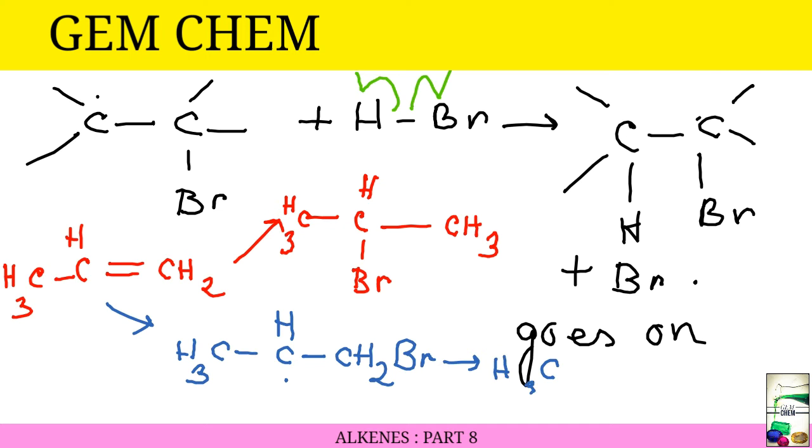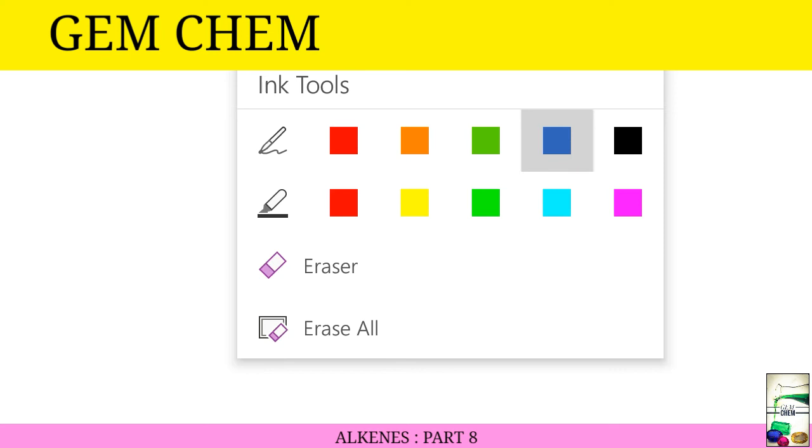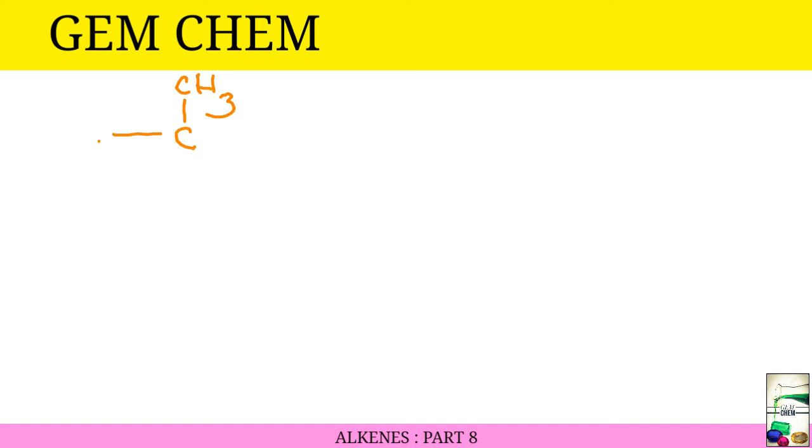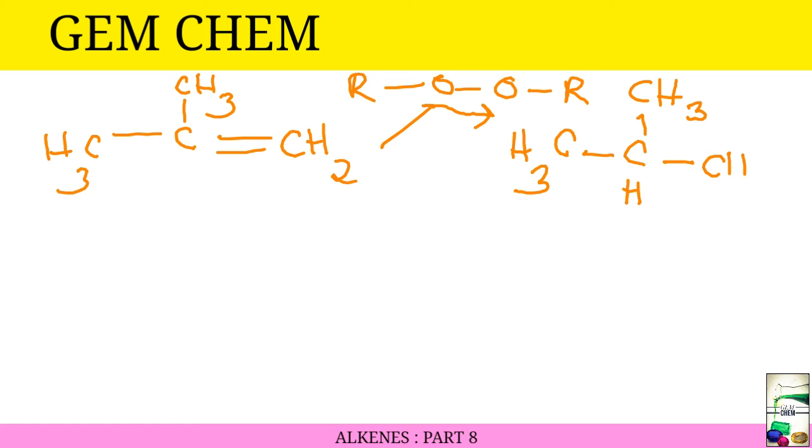Another example: suppose we take CH3-CH3 and CH2. In presence of peroxide, we get this product CH3-CH-CH3 and here CH2Br as the only product. This is important. This is anti-Markonikov product.